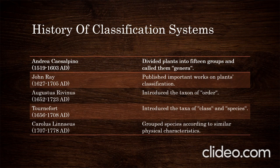Various scientists contributed to classification history: early scientists called groups 'genera.' John Ray published important works on plants and classification. Augusta Ravenius introduced the taxon of order. Tournefort introduced the taxa of class and species. Carolus grouped species according to similar characteristics.